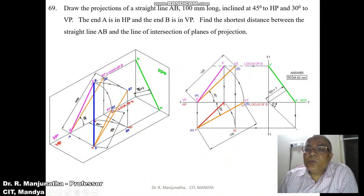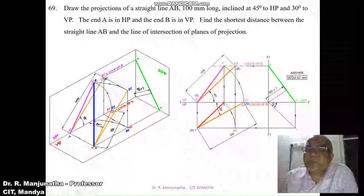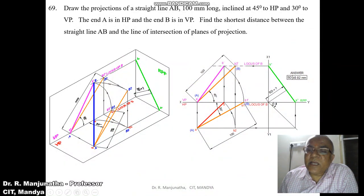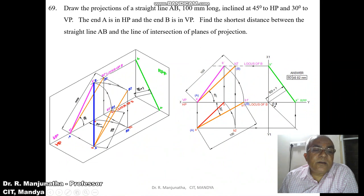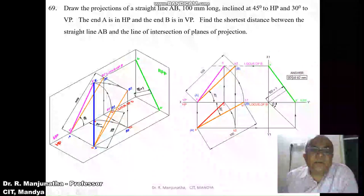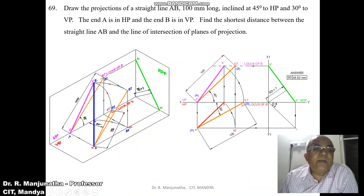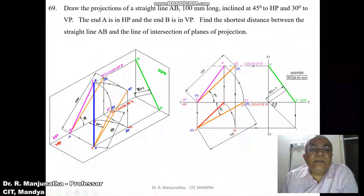Now we need to find the shorter distance. Measure the angle using a protractor. This line is at 90 degrees, and 180 minus the sum of 90 and the measured angle gives the required angle. Draw an inclined line at that calculated angle to cut the profile view at a point, which gives the shorter distance. Mark A-double-dash and P-double-dash accordingly.